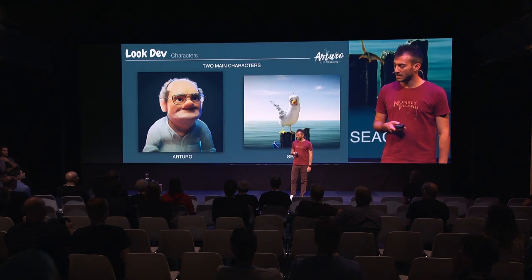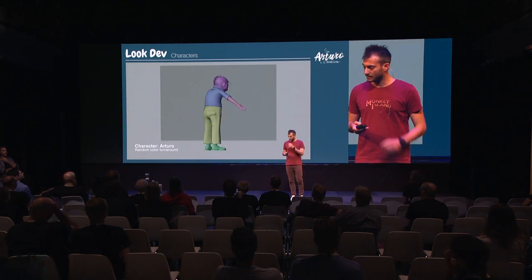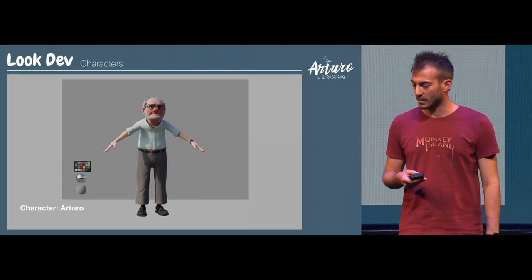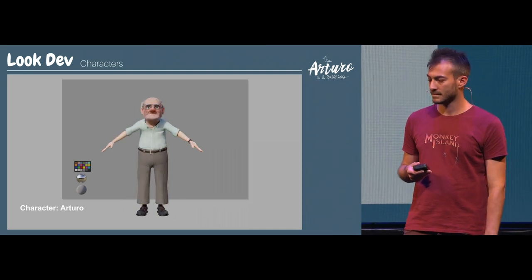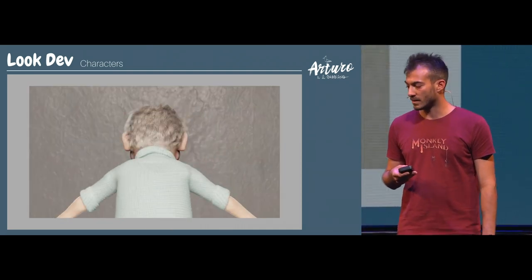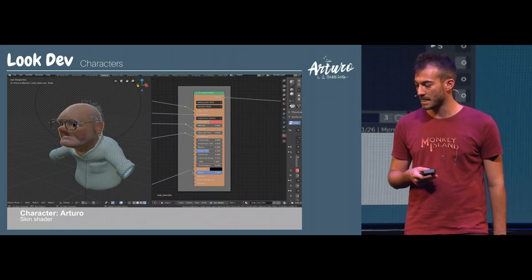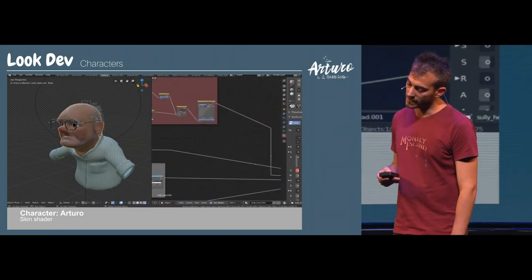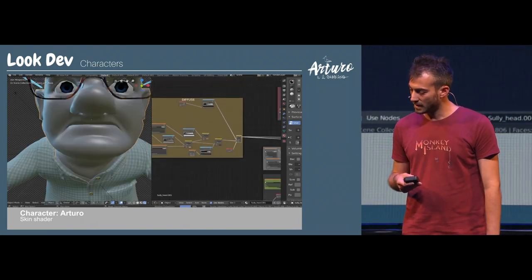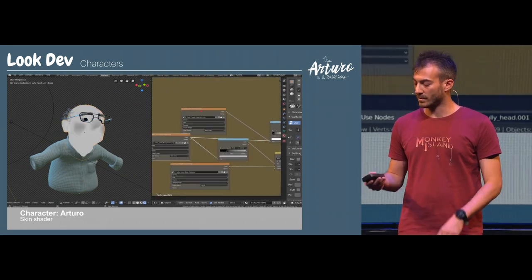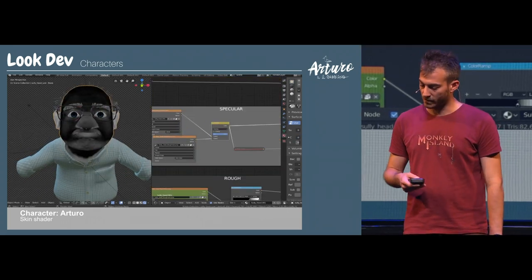What about the look dev? We have two main characters: Arturo and the seagull. This is a turnaround with an HDR to see the lighting on the model, and the skin shader for the head. We used the principled shader, and during production we switched to Blender 2.8, so we used random walk subsurface scattering. We used Eevee to control the skin.